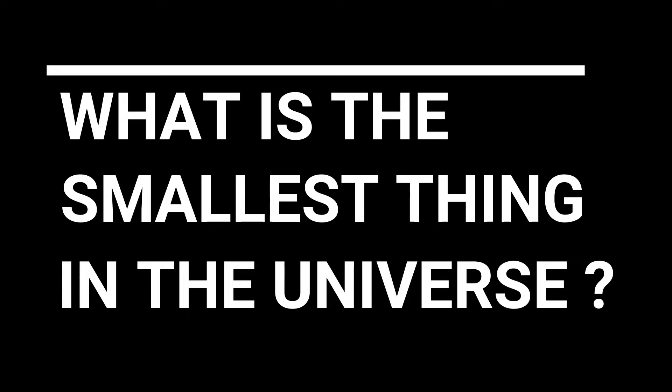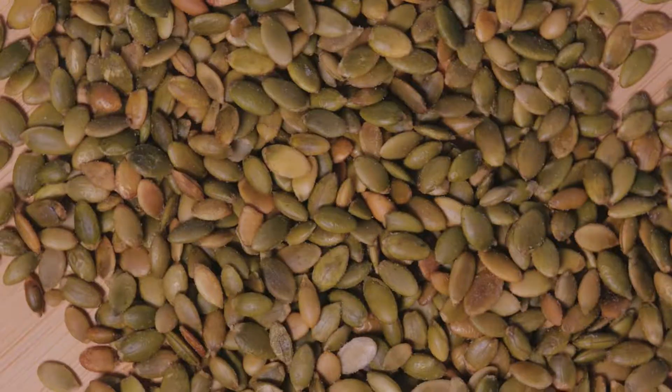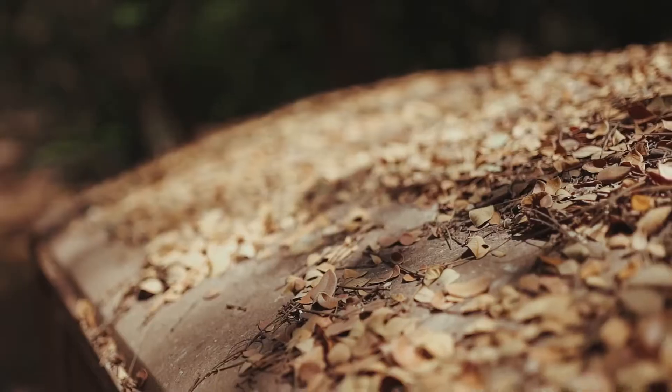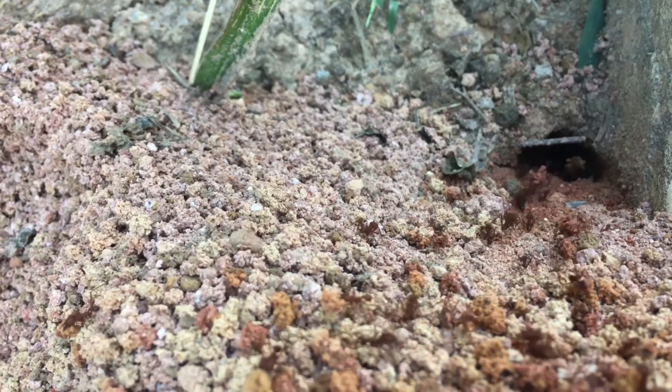What is the smallest thing in the universe? When we think about small things, we might imagine ants, fruit flies, seeds, grains of sand, or specks of dust. But even those small things are very big when compared with the tiniest things we know.